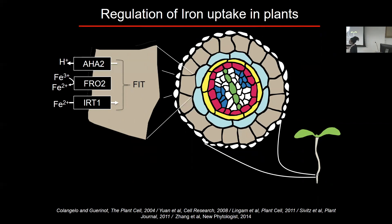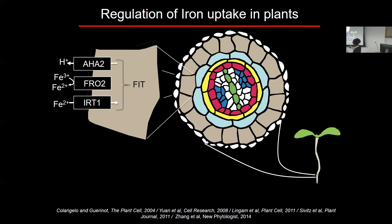Dicots like Arabidopsis undergo the strategy one response. First, they pump protons into the rhizosphere using AHA-2 or related proteins, which lowers the pH and makes iron more soluble. Ferric iron is the fourth most prevalent mineral in the Earth's crust, so plants must solubilize and reduce ferric iron to ferrous iron. In Arabidopsis, ferrous iron is transported into epidermal cells by the membrane-localized transporter IRT1, then travels to the vasculature via the xylem.